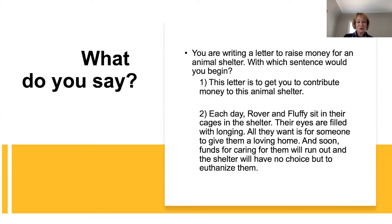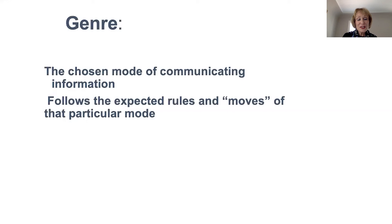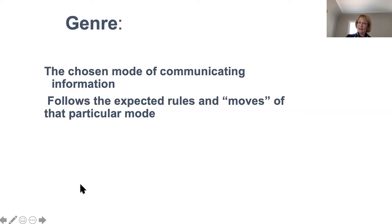When the person writes that letter and sends it to you, they are using a type of genre. A genre is a chosen mode of communicating information, and it follows expected rules and moves of that particular mode or type of text. We didn't use 'open your wallet and give me money' — instead they described the sad state of Fluffy and Rover. That's the genre of the letter asking for money: you start with something that will make the person feel something, care about something. It became a genre because it works. That's how genres come into being — they work.